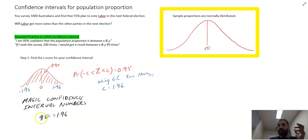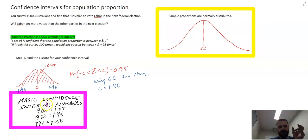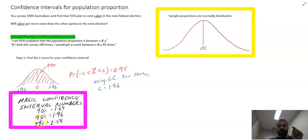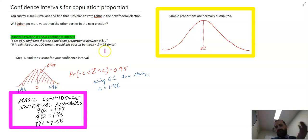For a 95% confidence interval, the magic Z score is 1.96. For 99%, you change that number to 2.58. There are three common magic confidence interval numbers; for anything else, just run the inverse normal calculation. You should memorize these three numbers because they're used so often. Why use different confidence levels? It depends on the stakes. If people's lives are at stake, use 99%. If it's a survey about ice cream flavor preference, maybe 90% or even 80% is fine — though that narrows the interval and increases uncertainty about whether you're correct.